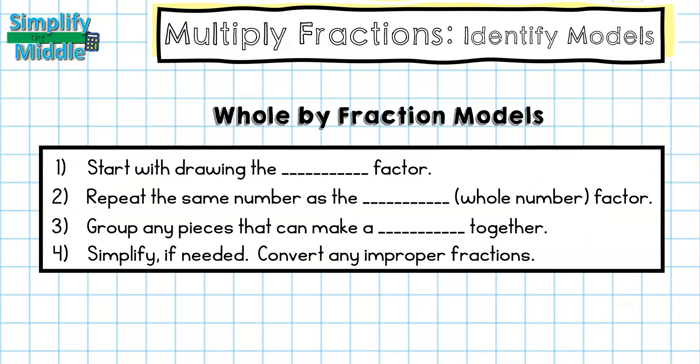Let's recap. For multiplying whole numbers by fractions with models, you're going to first start by drawing the second factor, and in this case that's going to be our fraction. Repeat the same number as the first or whole number factor. So remember, the whole number is your first factor, so you're simply going to draw a fraction and then repeat it as many times as the whole number says.